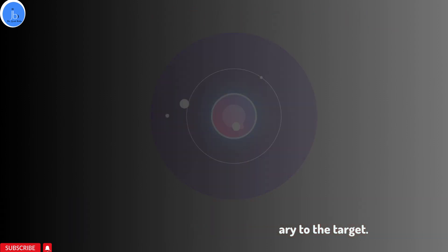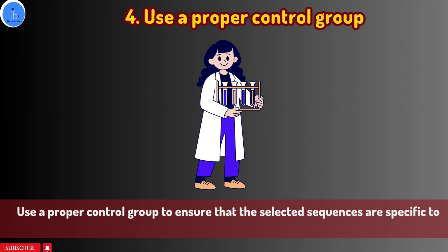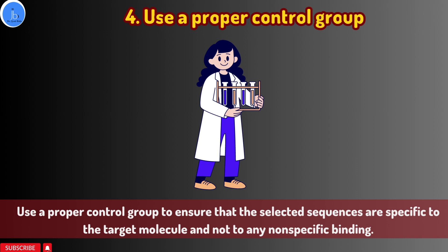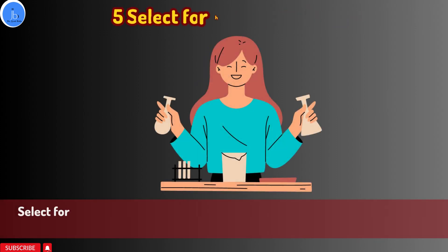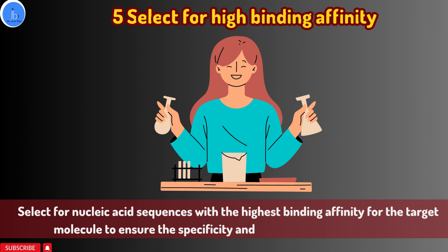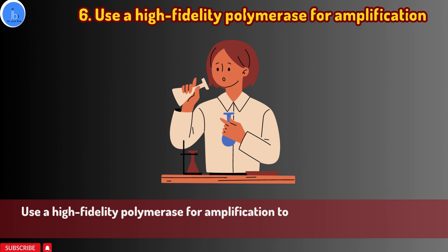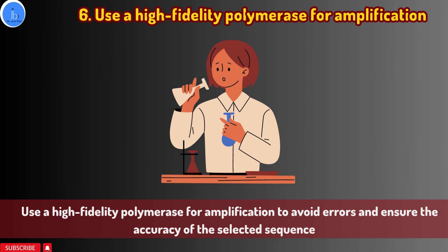Tip four: use a proper control group. While performing SELEX, it is very important to perform negative selection using a control group to ensure that the selected sequences are specific for the target molecule — this is the best way to remove non-specific binding from your SELEX rounds. Tip five: select for high binding affinity. Select nucleic acid sequences with high binding affinity for the target molecule to ensure the specificity and selectivity of the aptamers. Tip six: use a high-fidelity polymerase for amplification. Since SELEX is very much based on PCR, it is important to use a high-fidelity, high-quality-grade polymerase to avoid errors and ensure the accuracy of selected sequences.